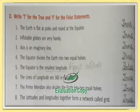For true or false — write T-R-U-E and F-A-L-S-E in full. The earth is flat at the poles and round at the equator: true — it is an oblate spheroid. Inflatable globes are very handy: true, because you can inflate them, remove the air, and carry them anywhere. Axis is an imaginary line: true. The equator divides the earth into two equal halves: true. The equator is the smallest longitude: false — it is a latitude and it is the biggest latitude.